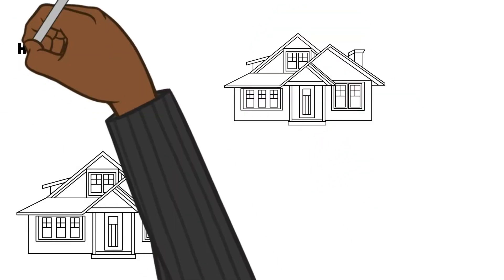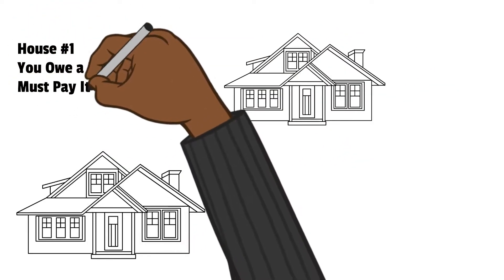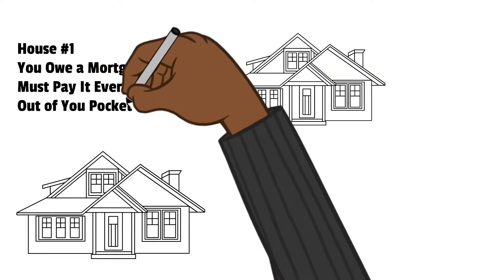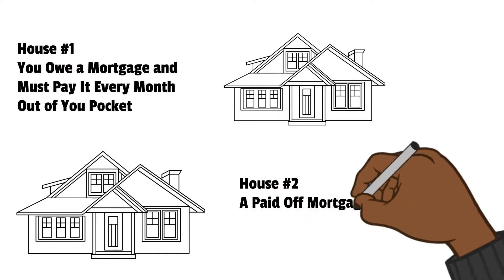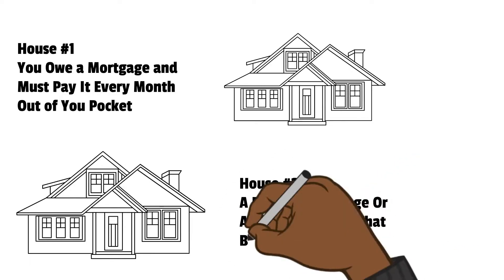A house that is paid off or better yet, a home that the owner rents out and earns an extra $300 each month is an asset. The owner is making more money.